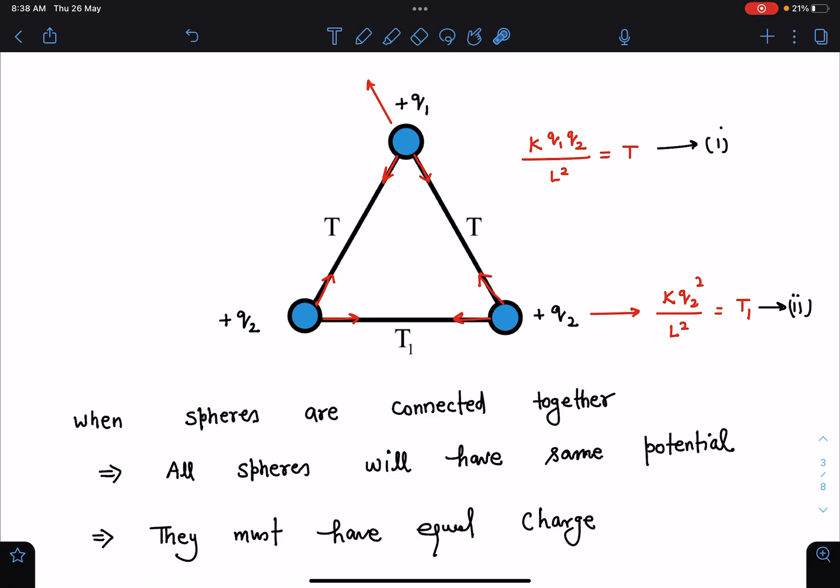These Q1 and Q2 we are using from our side, so they should not come in the final answer. You can find here in this case that this force which is KQ2 square by L square is equal to T1 and similarly here this force Fe between these two is equal to the tension T. KQ1 Q2 by L square is equal to T.